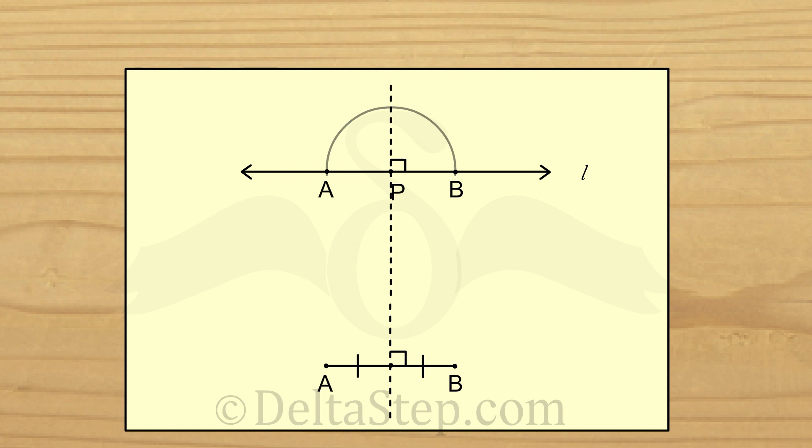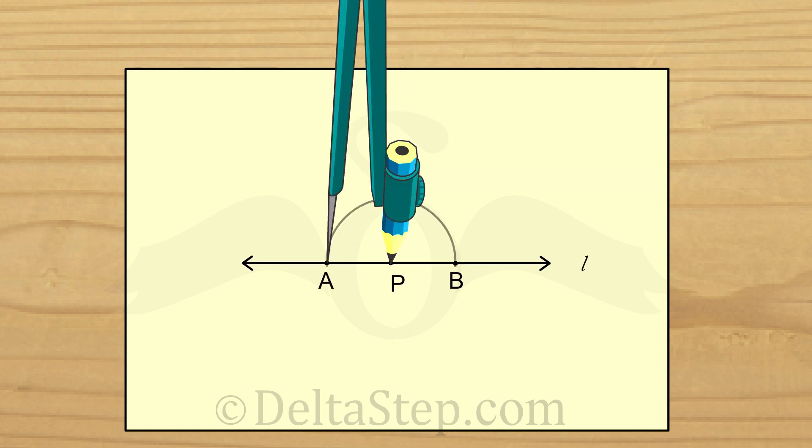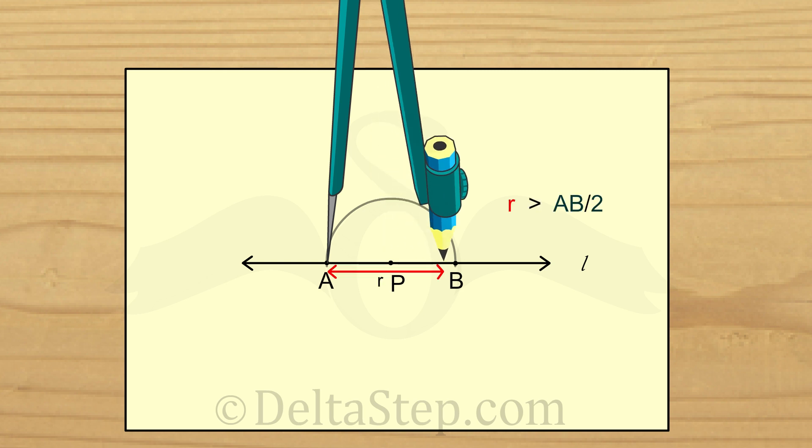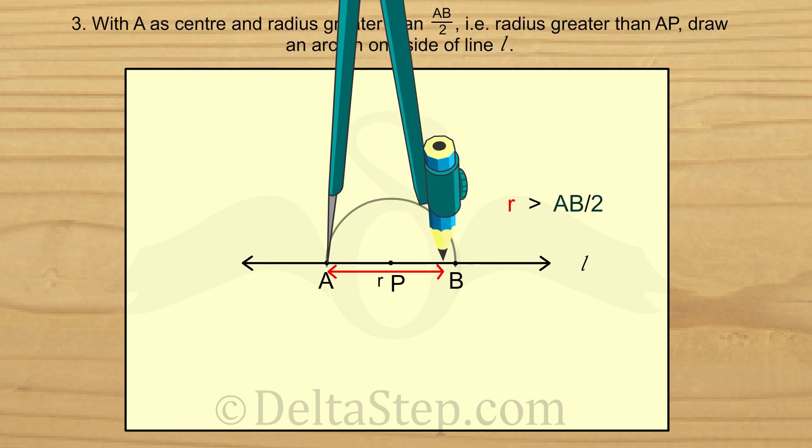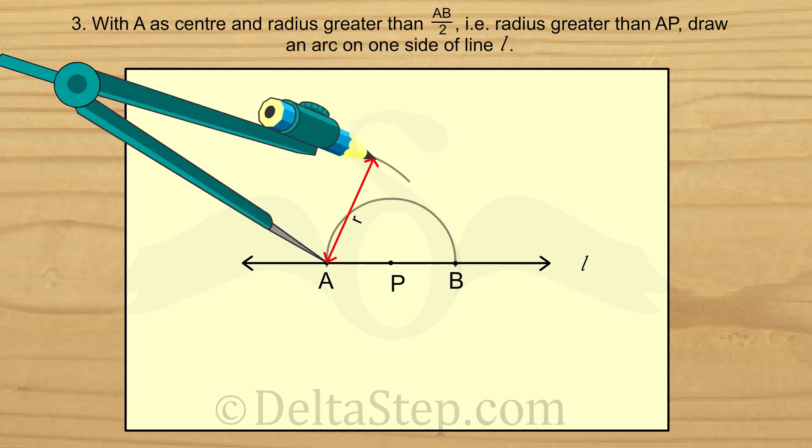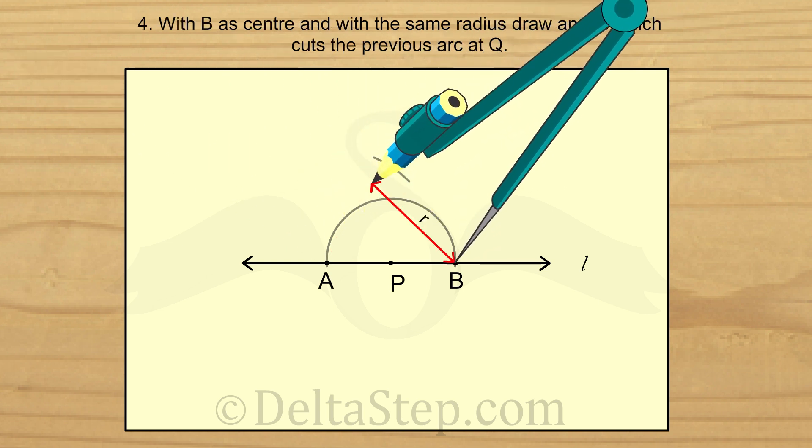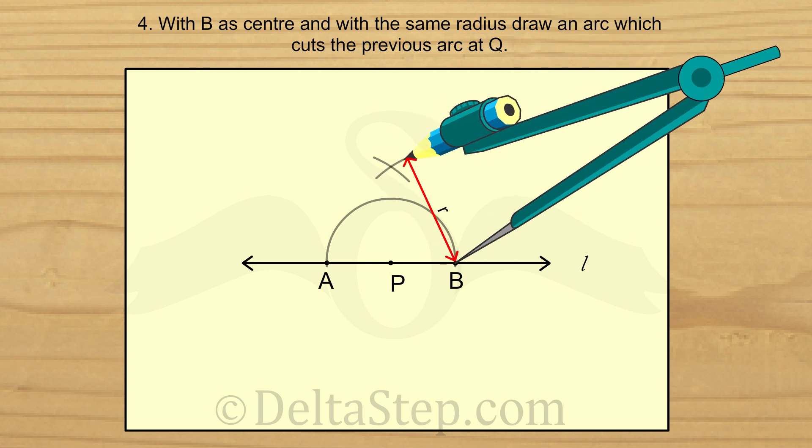So, let us do that. Let us take point A as the centre and radius more than half the length of line segment AB. We draw an arc from A on one side of line L. Now, with B as the centre and the same radius as before, we draw an arc from B such that it intersects the previous arc. We call this point of intersection as Q.